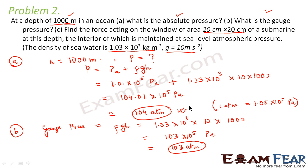Part three asks us to find the force acting on the window of area 20 cm by 20 cm of a submarine at this depth. We need to calculate force, and area is already given. Since pressure equals force per unit area, we need the value of pressure acting on the window. So we calculate the pressure that will act on the window of the submarine.